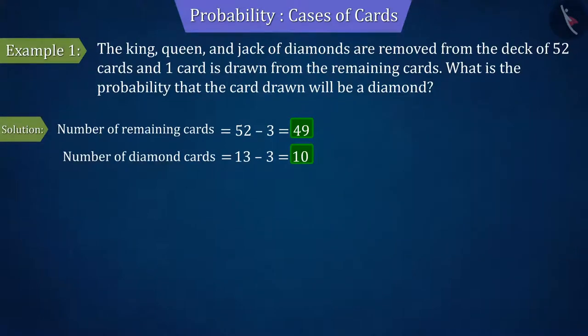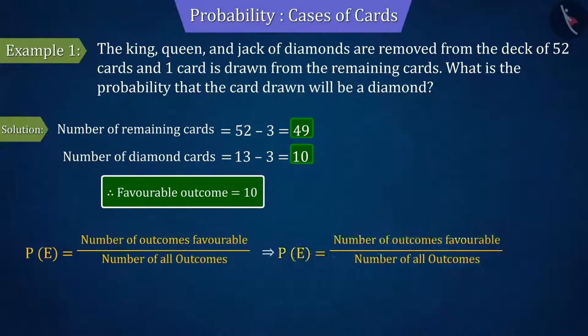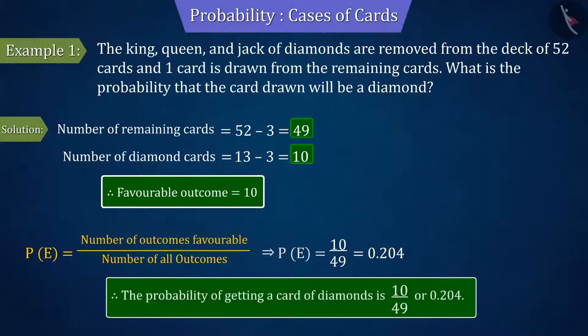In other words, the number of favorable outcomes of the event will be 10. By substituting the values of favorable outcomes and all possible outcomes in the probability formula, we get the result of probability as 10 by 49 or 0.204. So, we can say that the probability of getting a diamond card is 0.204.